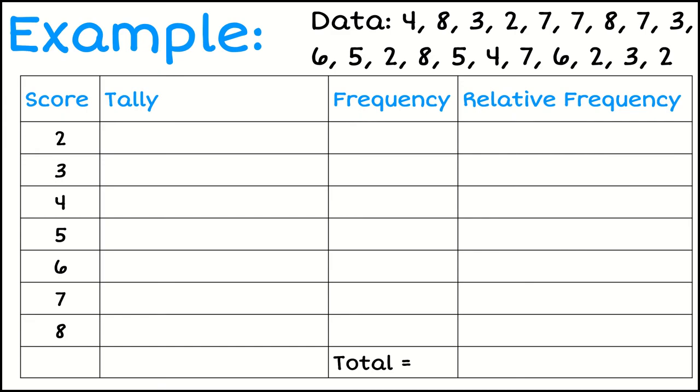So let's look at this example here. What I've done is on the left hand side there, I've put my different scores. The data itself could take any value from 2 to 8. So that's what I've done in my table. I've just got a column there with those scores.